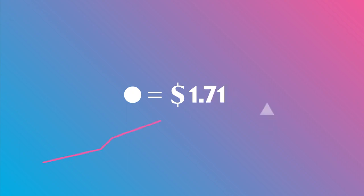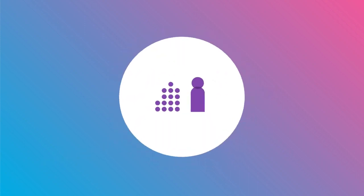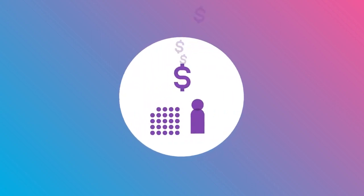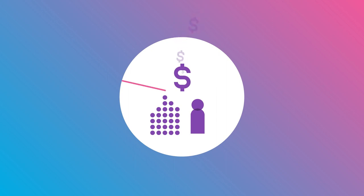When investment returns are positive the unit price will go up. When investment returns are negative the unit price will go down. So when the markets fall, unit prices will also fall. The number of units you are allocated is calculated by dividing the dollar amount of the transaction — that is the amount of contributions made to your account — by the unit price on the day of the transaction. As a result, if you are making the same contribution to your account in a falling market you are actually buying more units than before.